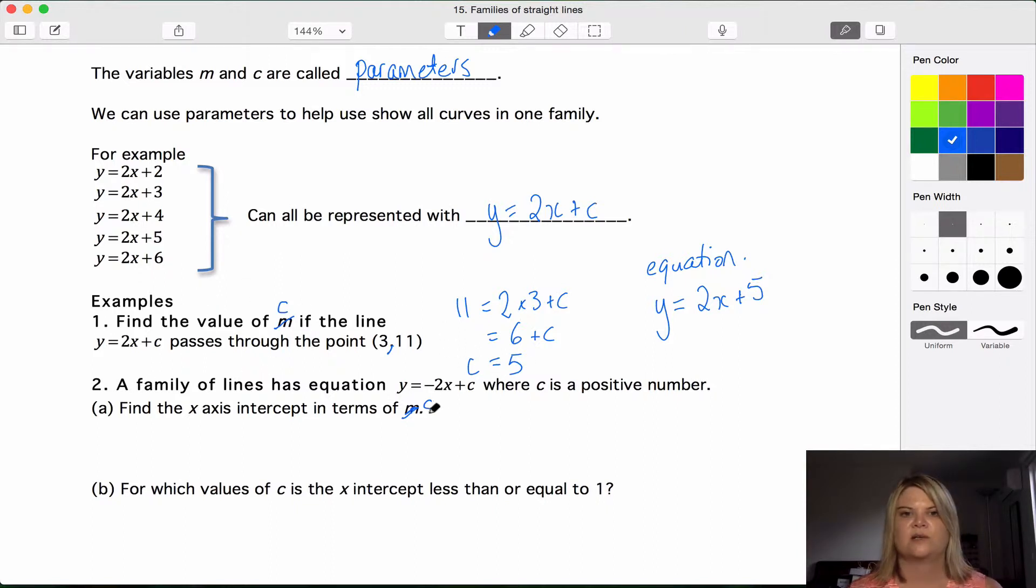Question 2, a family of lines has equation y equals negative 2x plus c where c is a positive number. Find the x-axis intercept in terms of c. So you need to think back to how you would normally find the x-intercept which would be to make y equals 0. So if we make y equals 0, we get 0 equals negative 2x plus c. And when it says to give our solution in terms of c, it means your answer will have c in it.